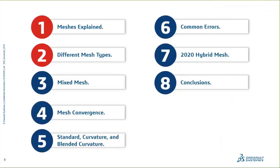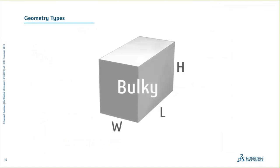Let's talk about different mesh types. There are three types available inside SolidWorks Simulation. Before we get there, let's talk about the geometry types that drive those mesh types. The first type is bulky geometry — where your length, width, and height are very similar. Think of a brick: all those dimensions are in inches and they're all very similar.